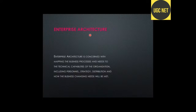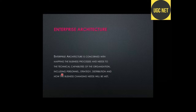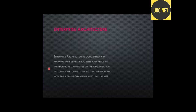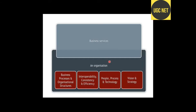Enterprise architecture is concerned with mapping the business processes and needs to the technical capabilities of the organization, including personnel, strategy, distribution, and how the business's changing needs will be met. It covers business services, business processes, organizational structure, interoperability, consistency, efficiency, people, processes, technology, and the vision and strategy of the business.